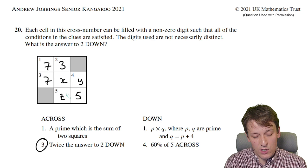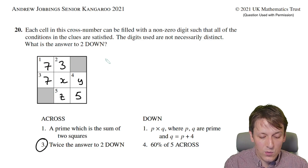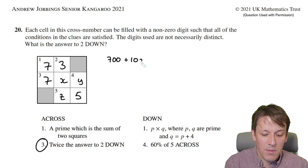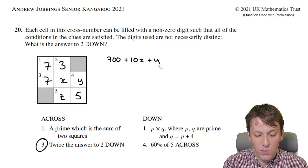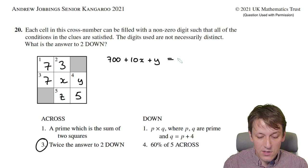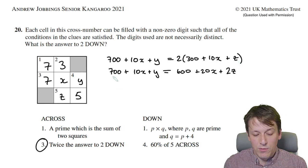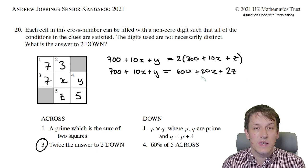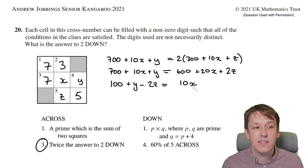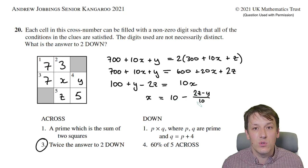I'm going to write down this clue: three across is twice two down. The digits here are 7, x, and y, which converts to 700 plus 10x plus y. This must be double two down, so that's 2 times (300 plus 10x plus z). Multiplying out the brackets gives 600 plus 20x plus 2z. Collecting terms: 100 plus y minus 2z equals 10x. Dividing by 10 and rearranging: x equals 10 minus (2z minus y) over 10.